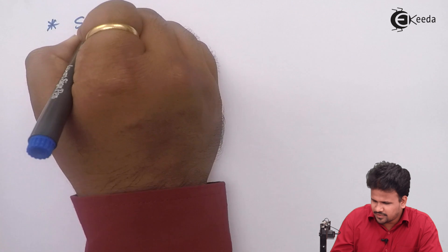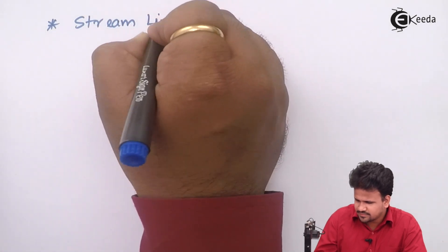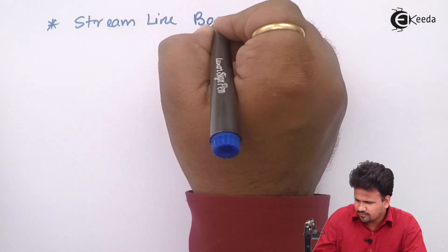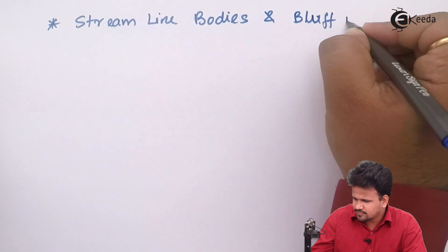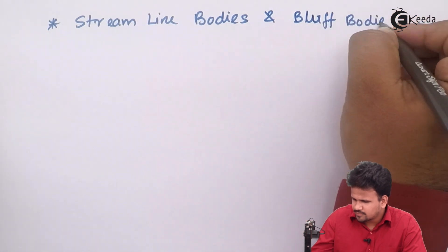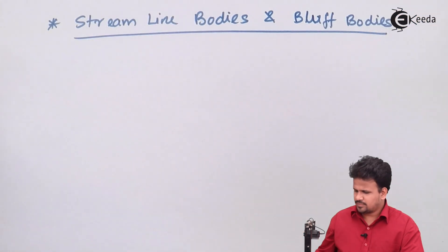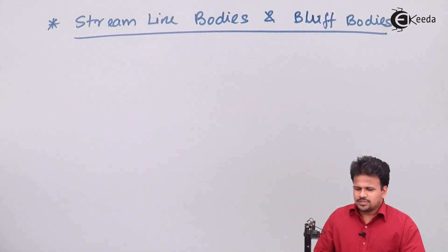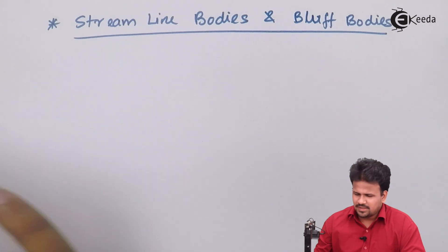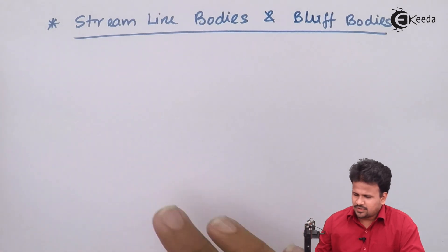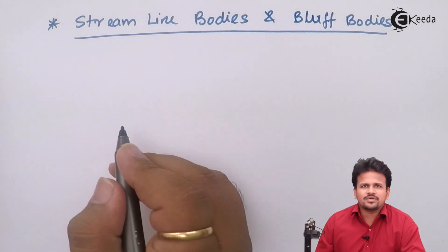We will study streamlined bodies and bluff bodies. In order to learn what a streamlined body is, we need to understand a few things about the boundary layer.